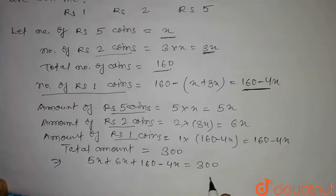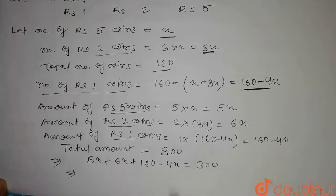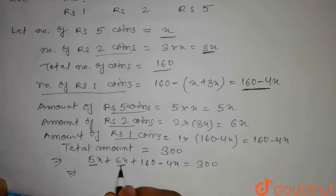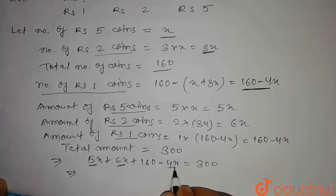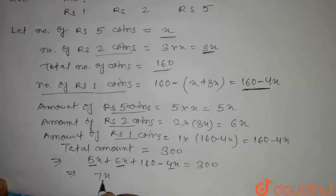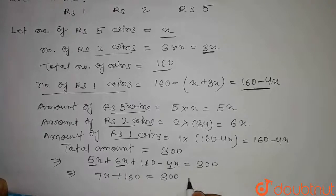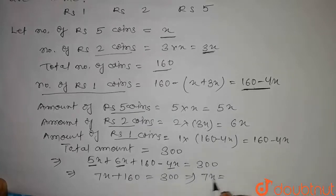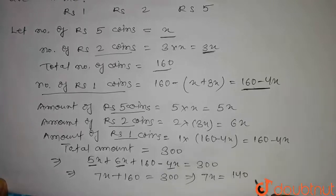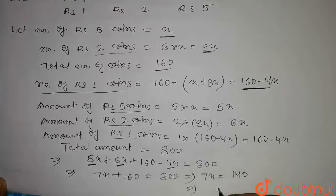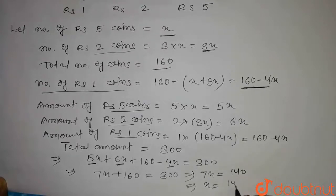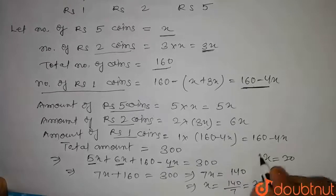Now we have to solve this equation. On solving, we get 5x plus 6x minus 4x, that is 11x minus 4x equals 7x. So we have 7x plus 160 equals 300. On further solving, 7x equals 300 minus 160, that is 140. So x equals 140 divided by 7, which is equal to 20.